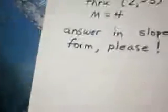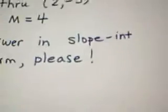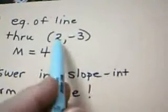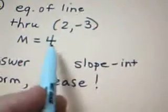Okay, here's our data. We're asked to find the equation of the line that goes through the ordered pair (2, -3), whose slope is 4.